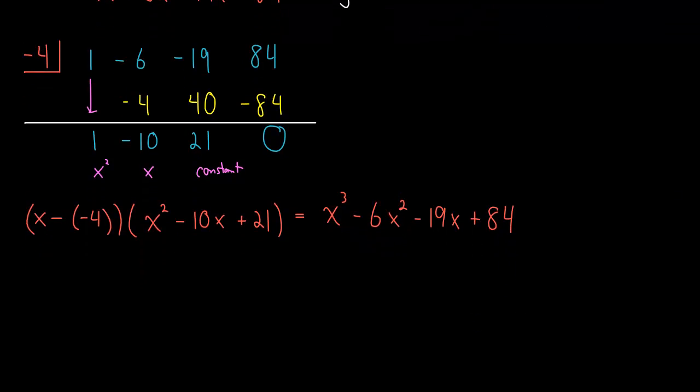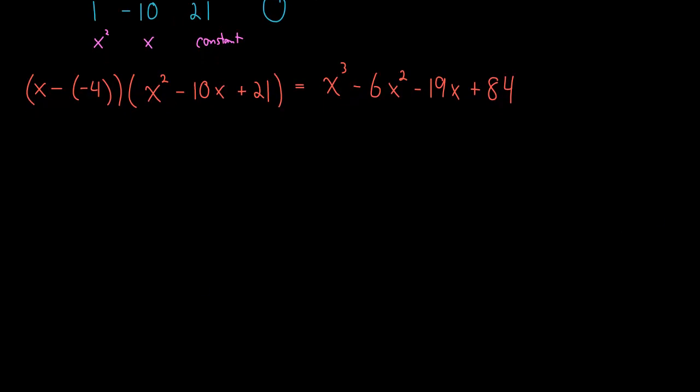So we have successfully factored our cubic polynomial using synthetic division. Now we're not quite done. Let's continue on doing one more step here. This is a minus minus, so let's make that a positive. So let's just rewrite this. This is x plus 4 times x squared minus 10x plus 21.